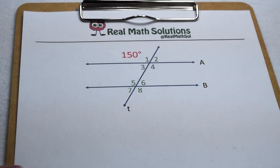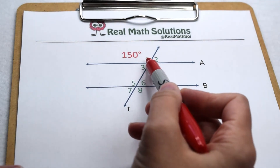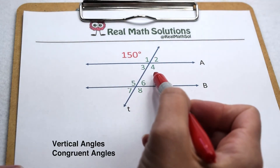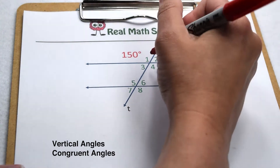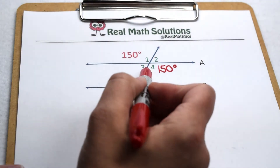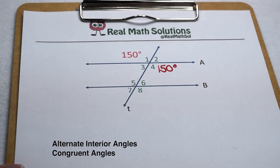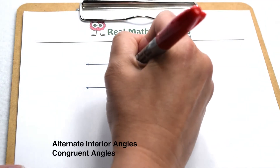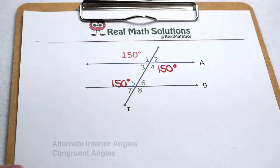Going back to our original problem, there's another path we could take. Starting again with angle one, angle one and angle four are vertical angles, therefore they're congruent, so angle four is also 150 degrees. Angle four and angle five are alternate interior angles, so they're congruent and angle five is worth 150 degrees.